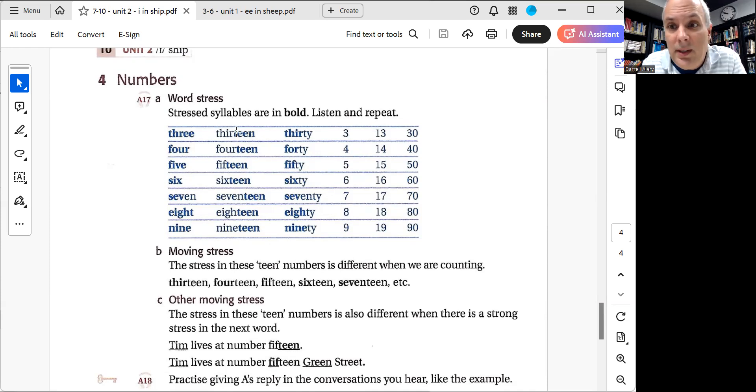Three, 13, 30. You can say them. We'll say them together. We'll start on the second line here. Four, 14, 40. Your turn to say it. Five, 15, 50. Six, 16, 60. Seven, 17, 70. Eight, 18, 80. Nine, 19, 90.